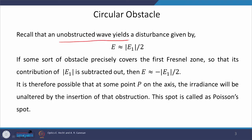Now what will happen if we replace this circular aperture with a circular disc or circular obstacle? Recall that an unobstructed wave yields a disturbance equal to mod of E₁ by 2. If we have a point source emitting a spherical wave and this is point of observation P, then due to this point source at point P we receive a field equal to mod of E₁ by 2, where E₁ is the contribution from the first Fresnel zone.